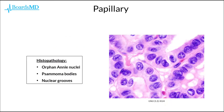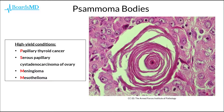Papillary carcinoma of the thyroid has these classic histopathologic features. We can see the presence of orphan Annie nuclei, appreciated here where we can see this central clearing — pretty classic for orphan Annie nuclei. These patients may also have psammoma bodies histopathologically, which we will show examples of in the coming slides. And we can see nuclear grooves, appreciated here where you can see this linear groove, which is highly classic for papillary carcinoma of the thyroid. Psammoma bodies can also be appreciated in this classic histopathologic image, where we essentially have these concentric loops.